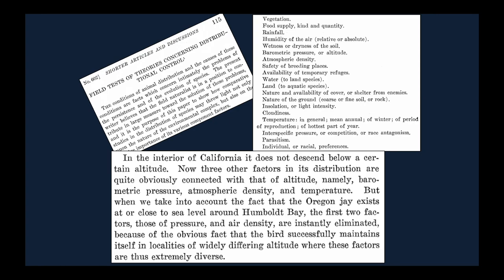Another early paper was called 'Field Tests of Theories Concerning Distributional Control.' He's talking about a jay — a high-elevation jay — and gives the example that in California the species does not descend below a certain altitude. Three factors connected with altitude are barometric pressure, atmospheric density, and temperature. He then gives an interesting geographic test, pointing out that in northern California this species goes almost all the way down to sea level, so atmospheric pressure and air density are eliminated, focusing us on temperature.